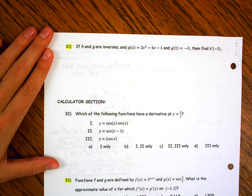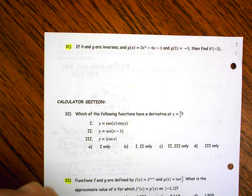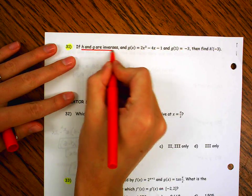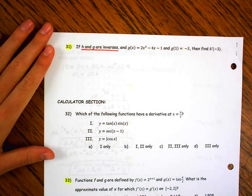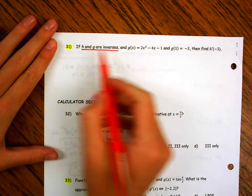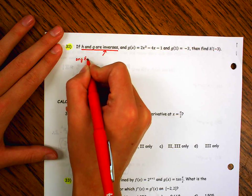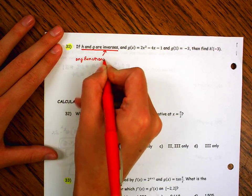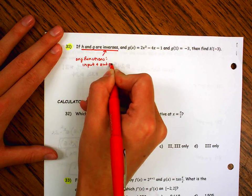Okay, so this is h and g are inverses, and g of x equals all that. g of 1 is negative 3. Then find h prime of negative 3. Well, the key thing here is that h and g are inverses. Because if they're inverses, we have a formula that tells you the derivative of 1 is 1 over the derivative of the other. And then inside of that, well, rather than saying it out, I'll just show you in a second. But one other thing you have to remember,